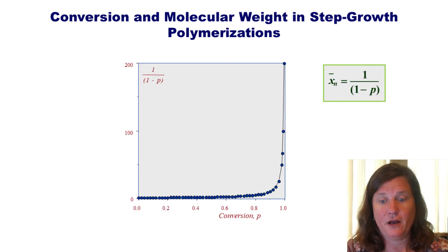So, if we take a look at the plot of one over one minus P versus conversion or extent of reaction, we see this. And we've looked at this earlier in the semester, but it's good to remember. We do not get high molecular weight or high degrees of polymerizations until very high extent of reactions for step growth polymers. We have to really push these reactions to get high molecular weight or high degrees of polymerization.